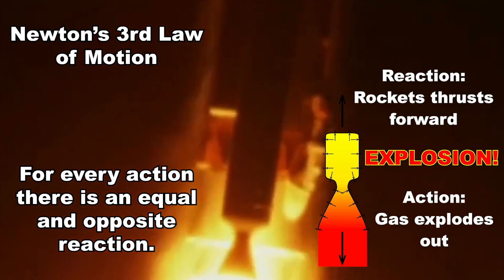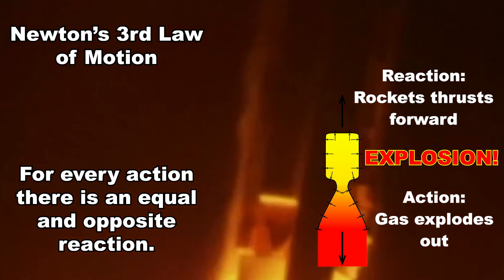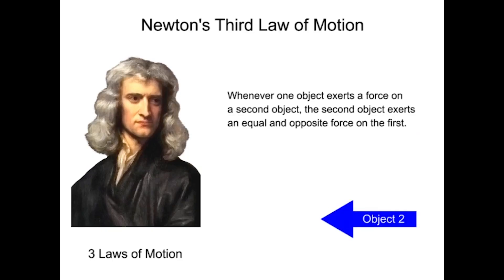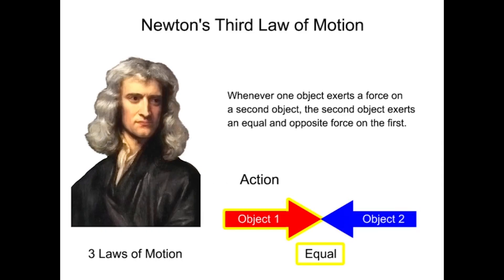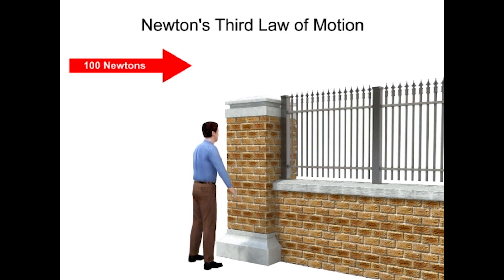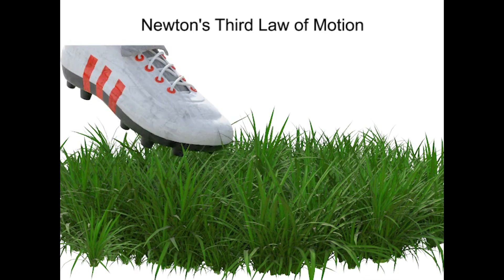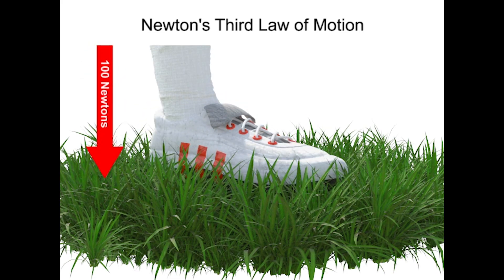Newton's third law of motion states that whenever one object exerts a force on a second object, the second object exerts an equal and opposite force on the first. When one object pushes against another, the force applied is opposed by an equal force in the opposite direction. When you exert a force against a wall, the wall pushes back equally. When you push your foot down against the floor, the floor exerts a force back up to your foot. Every action of force has an equal but opposite reaction.